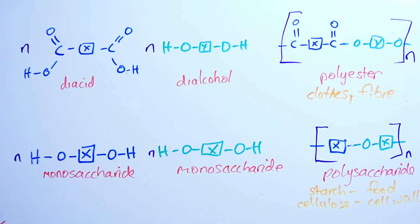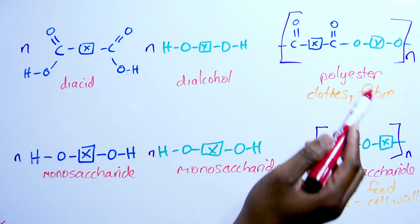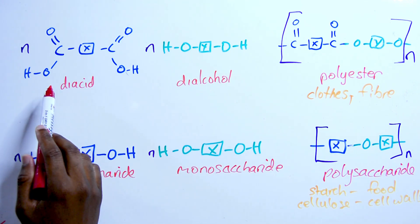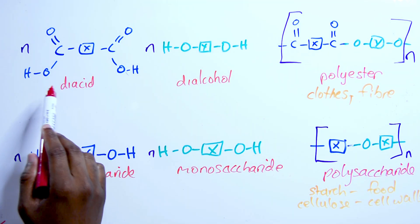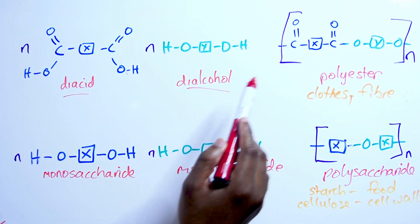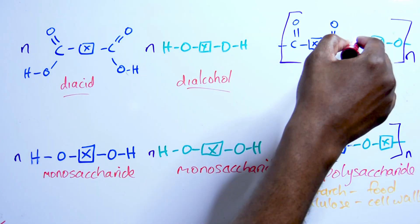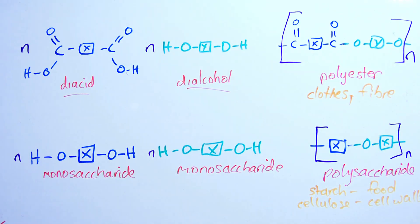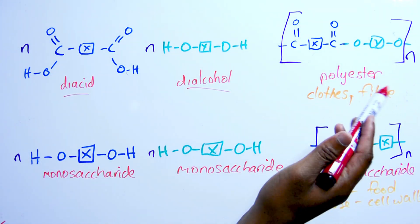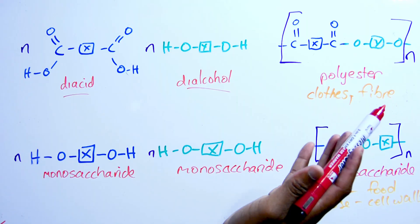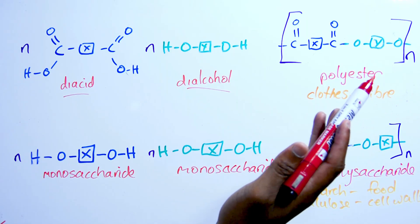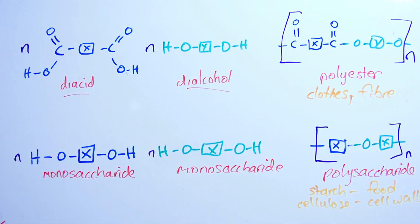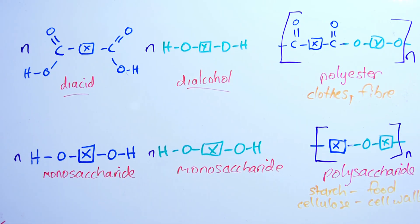Let's take a quick peek at the condensation types. We have polyesters and polysaccharides. We had a diacid and a dialcohol coming together to make polyester — you see the ester linkage here, the double bond O and O. Polyesters are used for clothes, fibres, anything with artificial cloth, pillows, and seals for ships.